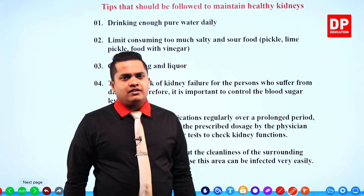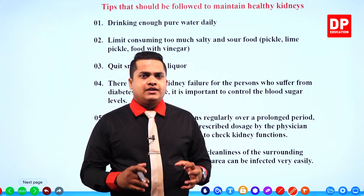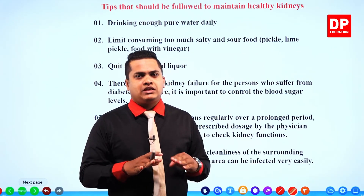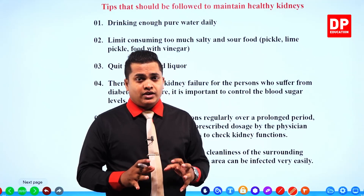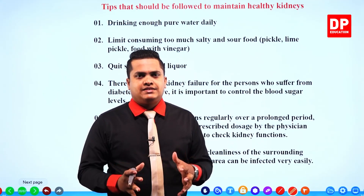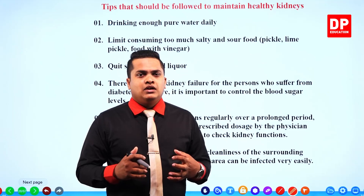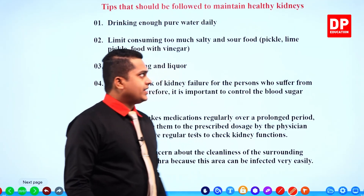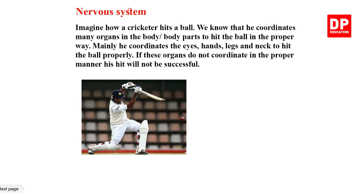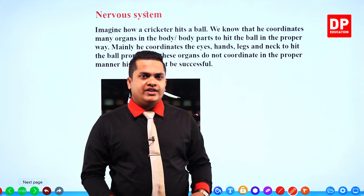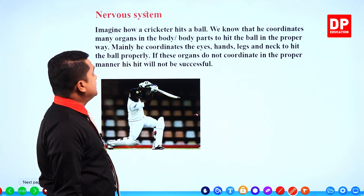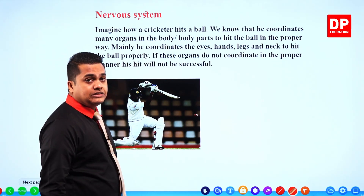We've now discussed kidney diseases, urinary infections, and diseases related to the urinary system. It's now time to start a new part of the lesson — the nervous system. In the earlier part we discussed about the kidneys and the urinary system; now we are discussing about the nervous system of the human.